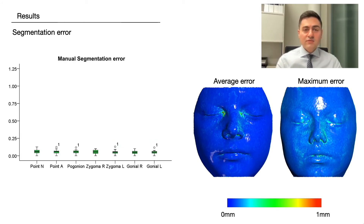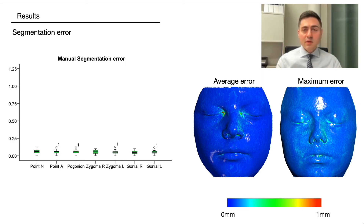The findings for segmentation error, which is unavoidable when extracting surface images from 3D volumetric data, were also promising. Segmentation error was minimal, averaging below 0.2 mm.